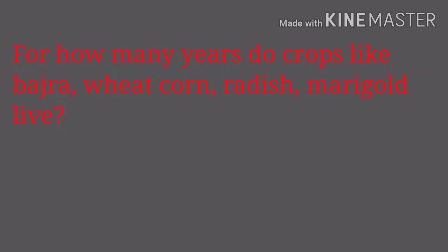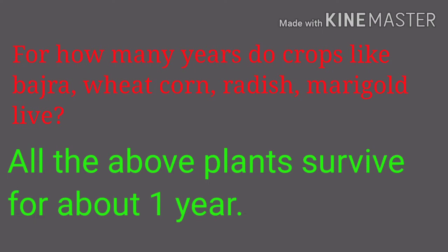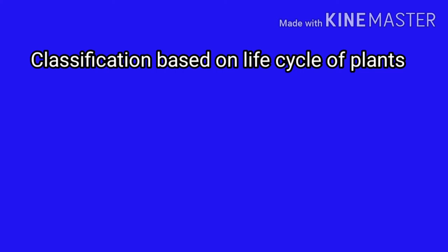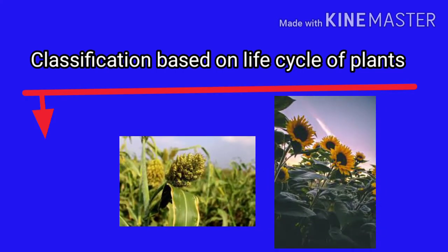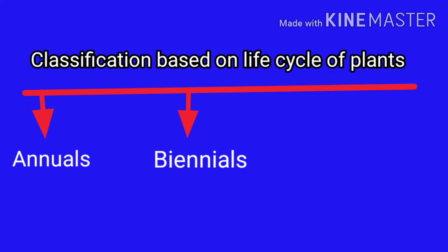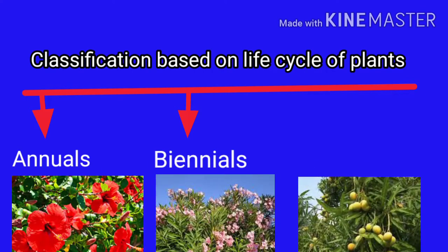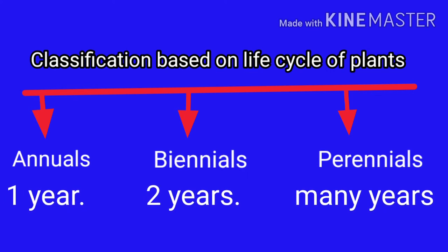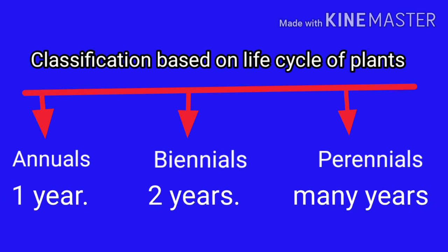For how many years do crops like jowar, wheat, corn, radish, and marigold live? All these plants survive for about one year. Classification based on the life cycle of plants: the life cycle of plants like jowar and sunflower is completed in one year — these are called annuals. Plants like carrot and beetroot have a life cycle of 2 years — they are called biennials. Shrubs like hibiscus and oleander and trees like mango and gulmohar live for several years and bear flowers and fruit — they are called perennials. According to the period of their life cycle, plants are classified as annuals, biennials, and perennials.